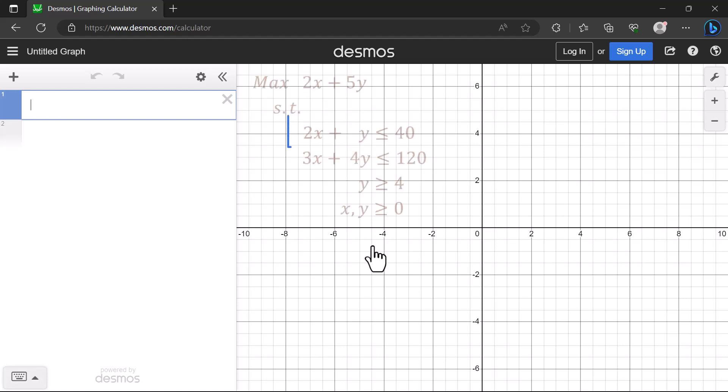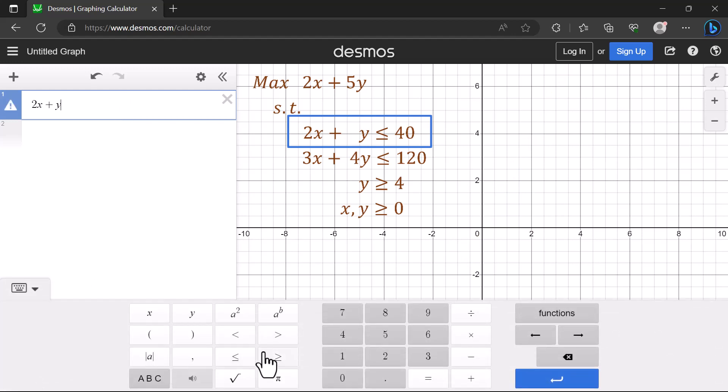I'm going to begin with the first constraint. On the left here, I'm going to type 2x plus y. Then I can click the keypad icon here and click the less than or equal sign. Or I can also do that on the keyboard by typing less than sign followed by the equal sign. Then 40.